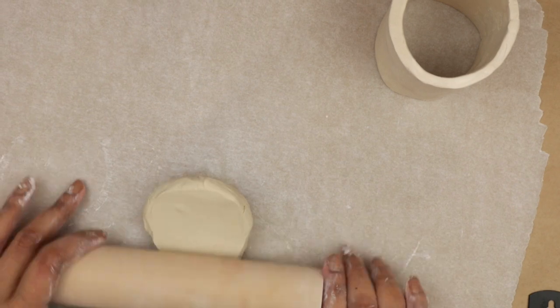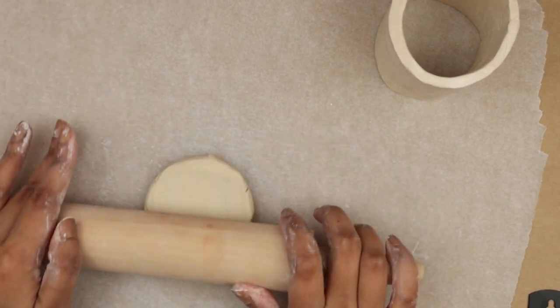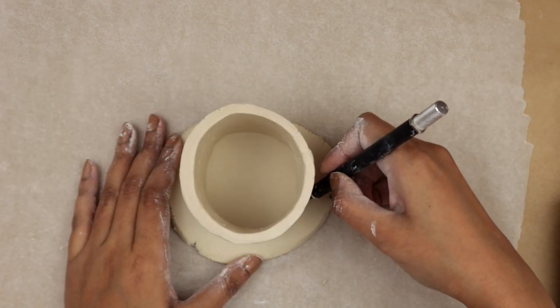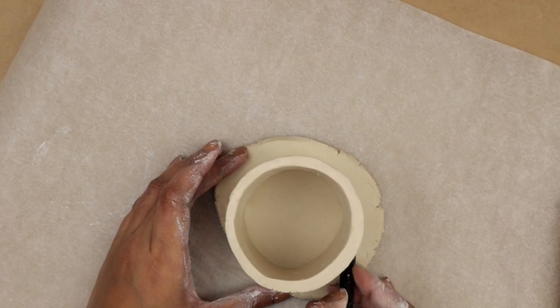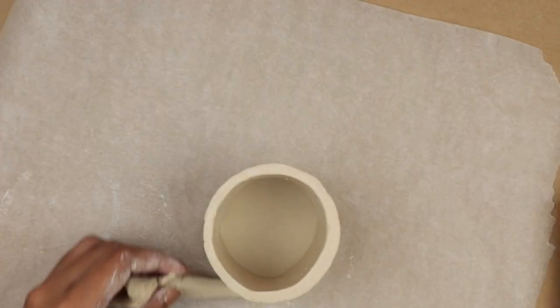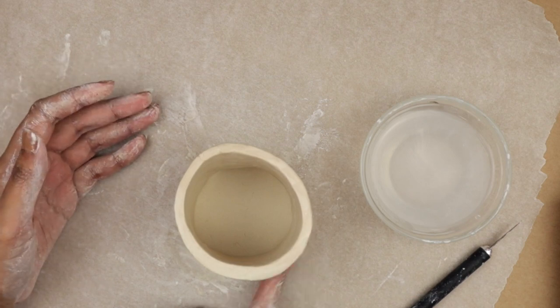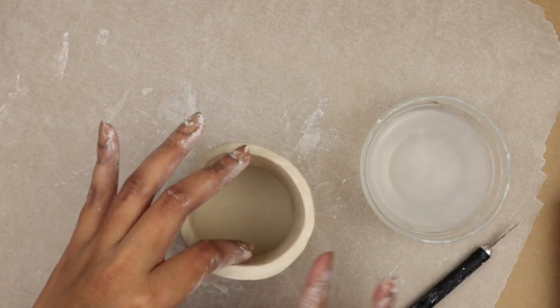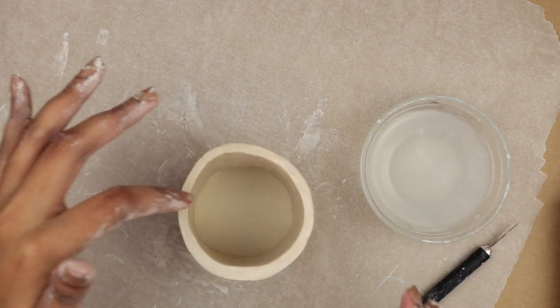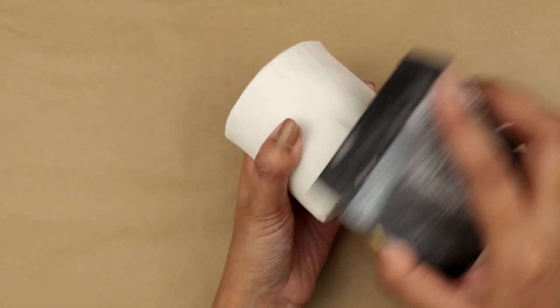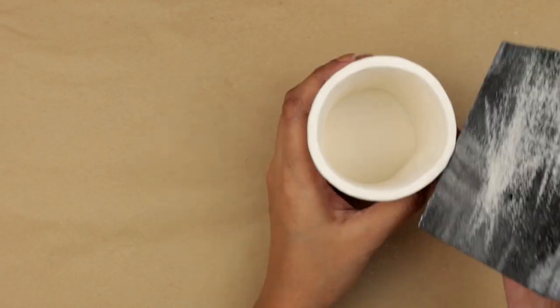To make the base for the planter, I am rolling out another chunk of clay and then I am placing the planter on the base and cutting all the way around. I am smoothing the edges. I'm using water to smooth the joints and to give it a clean look. After it dried down completely, I went ahead with my sanding sponge to sand down any texture.